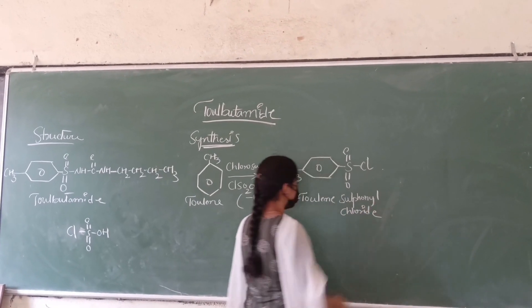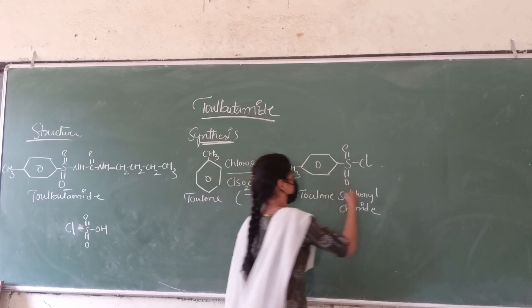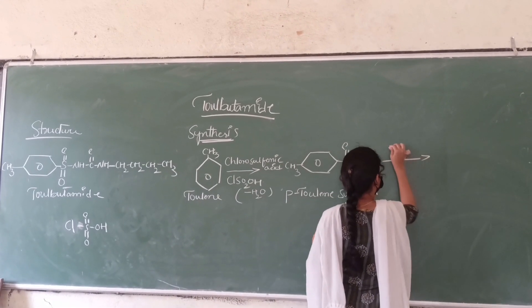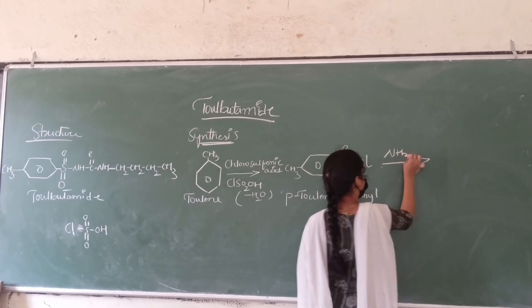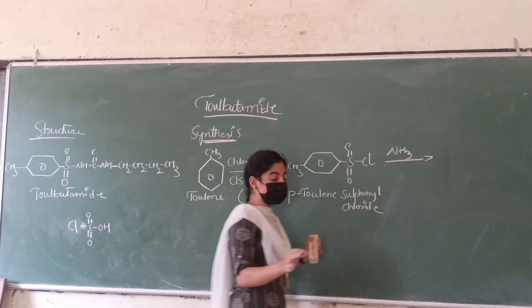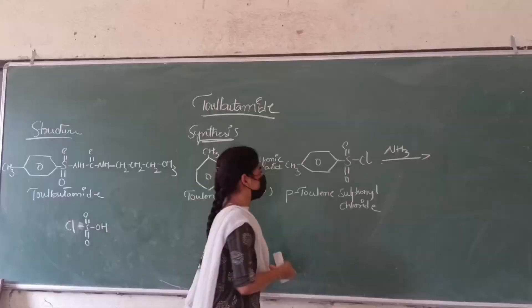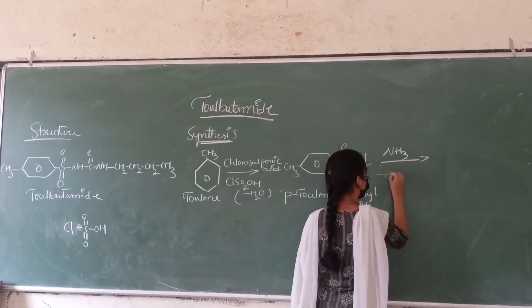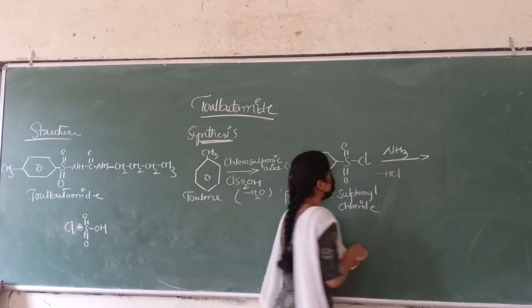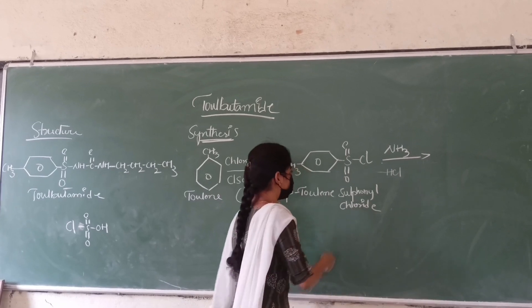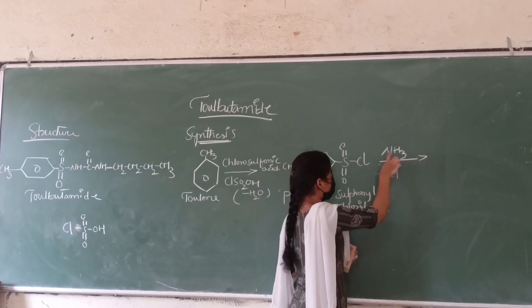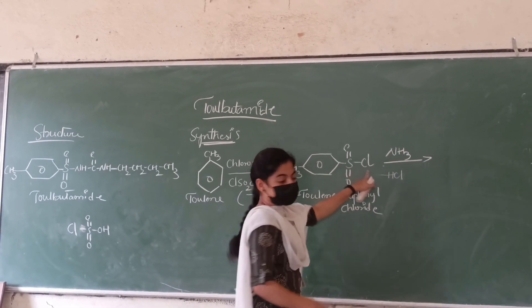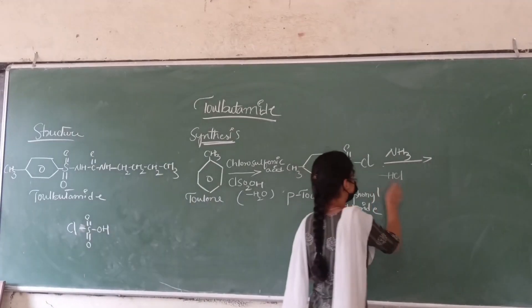This compound is treated with ammonia. The compound reacts with ammonia, and here removal of HCl takes place. One hydrogen from NH3 and from this compound the Cl will be removed, giving HCl.